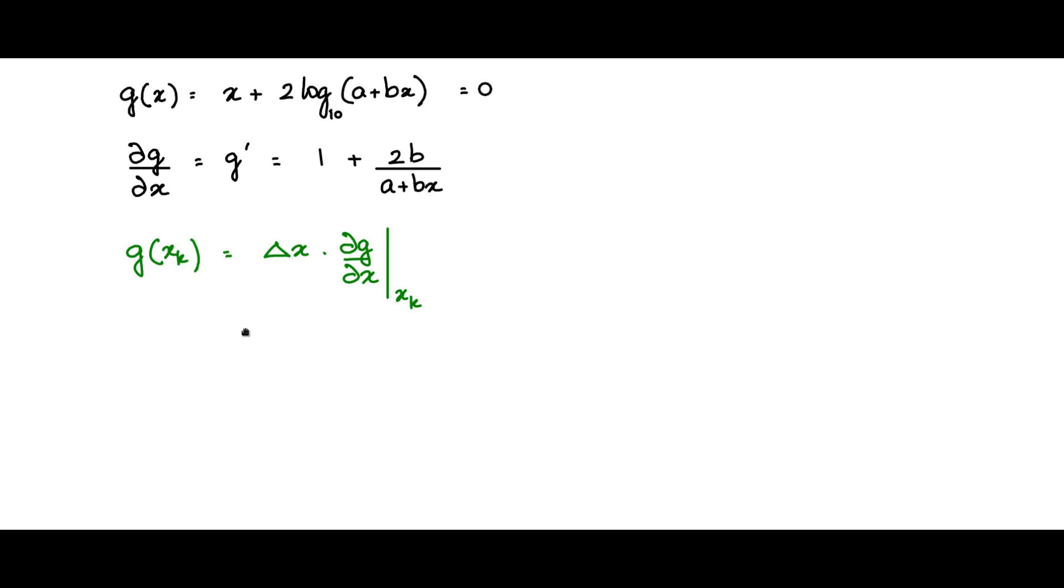This will give you an evaluation of g at x k. Now, delta x is nothing but x k minus x k plus 1. Previous iteration minus the next iteration value.